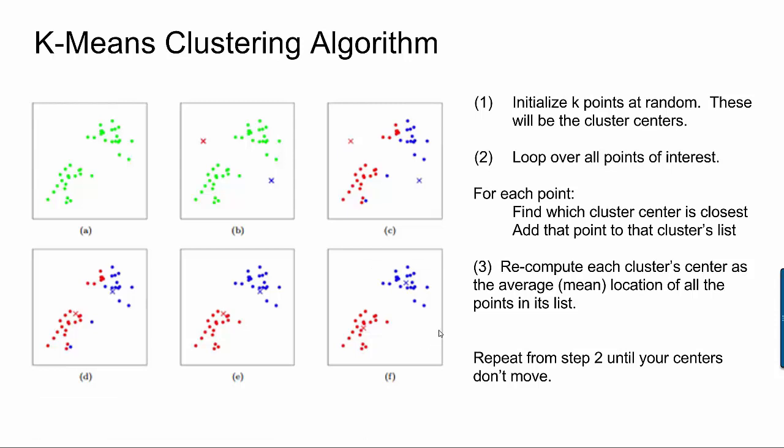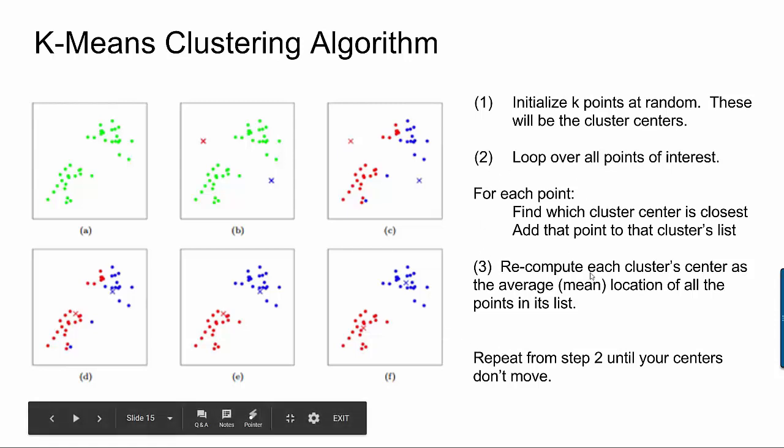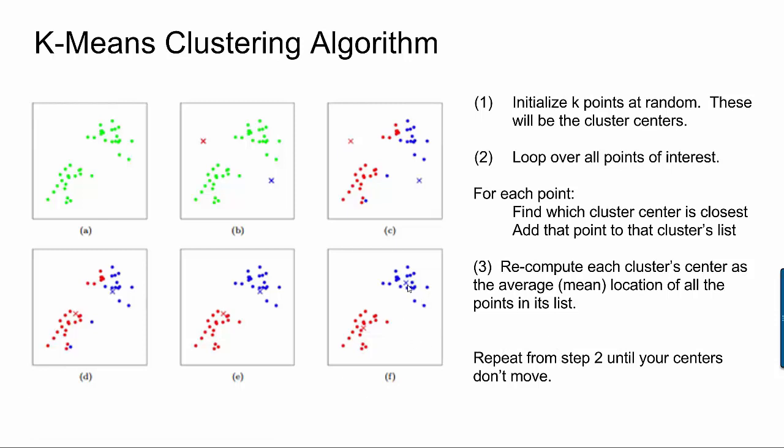And if the set of points in the cluster hasn't changed, then the recalculated center won't change either. So typically you would keep looping until eventually your centers don't change and that tells you that you've found a stable set of clusters.